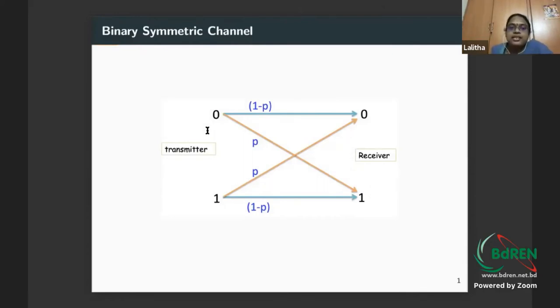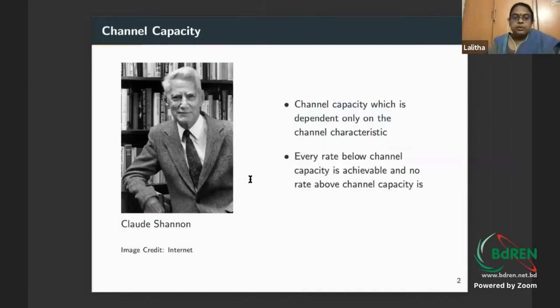First we'll begin with coding for communication. This is an illustration of a binary symmetric channel. Whenever we talk about communication, there's a transmitter, receiver, and a channel between them. The simplest channel is the binary symmetric channel where I transmit a zero and a one. The channel introduces noise. The zero and one can be received as is, or there's a certain probability p that it gets flipped, called the crossover probability.